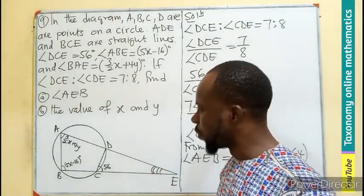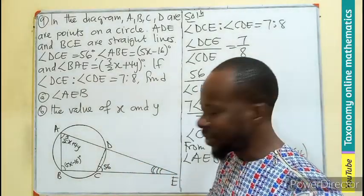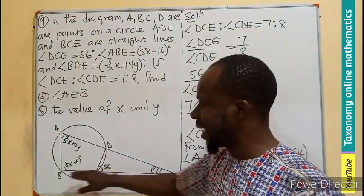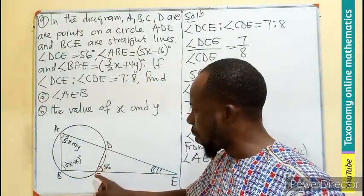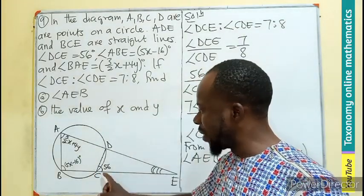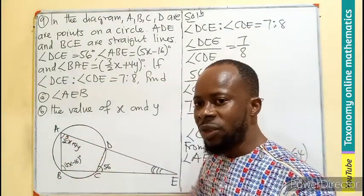And this very angle is just 180 minus 56. So I can do that and get one equation. Similarly, this plus this will also be angles that will add up to 180.